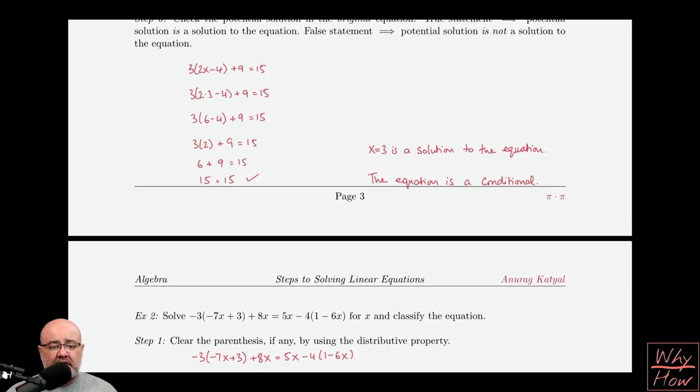Here we're asked to solve negative 3 times the quantity negative 7x plus 3, plus 8x, equals 5x minus 4 times the quantity 1 minus 6x. It seems like a mouthful and it seems long and tedious, but it really isn't. As long as we follow the same six steps, we should be able to solve this problem without any issue.